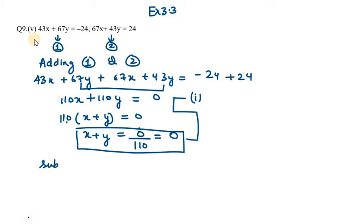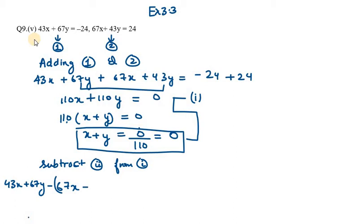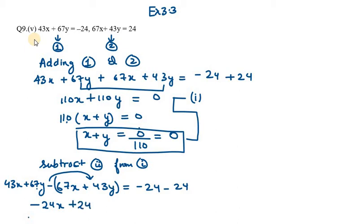Now we need to find equation number 2. For that, we need to subtract equation 2 from equation 1. That gives us 43x plus 67y minus (67x plus 43y) equals minus 24 minus 24. So 43x minus 67x gives minus 24x.